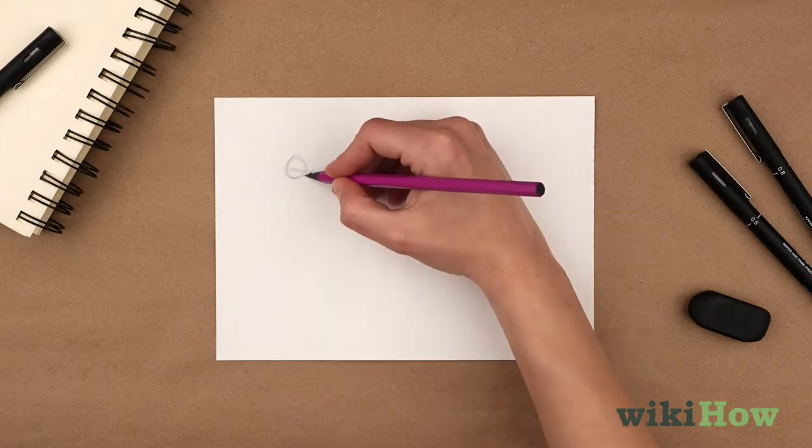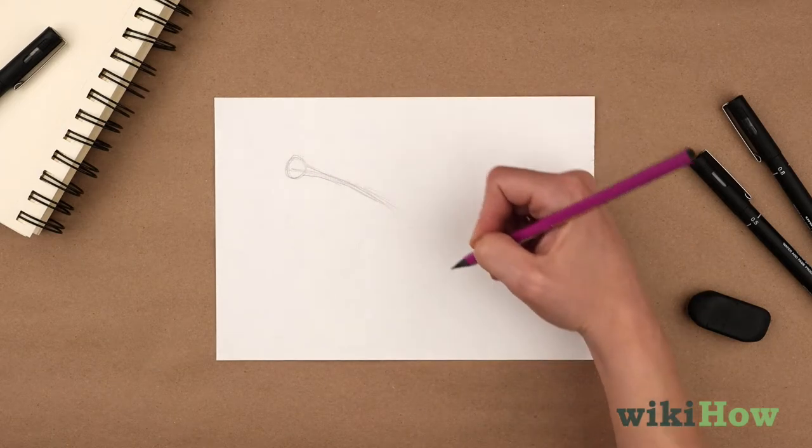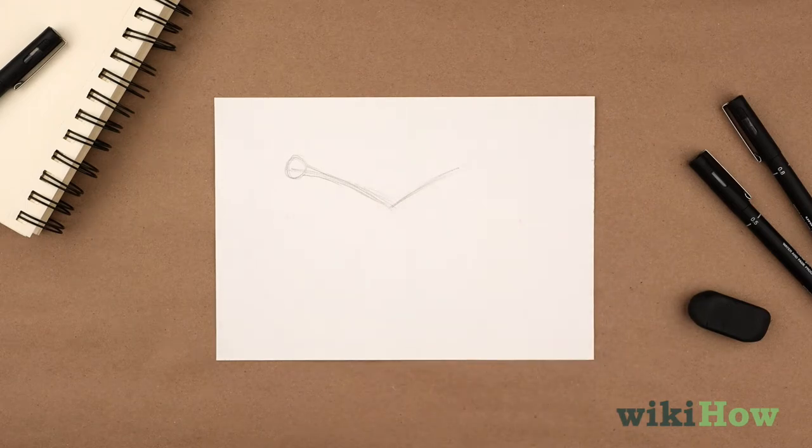Make a ball for the shoulder joint. Then sketch the upper arm and forearm in a wide V-shape.